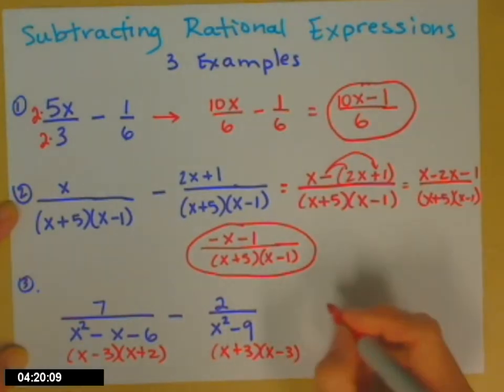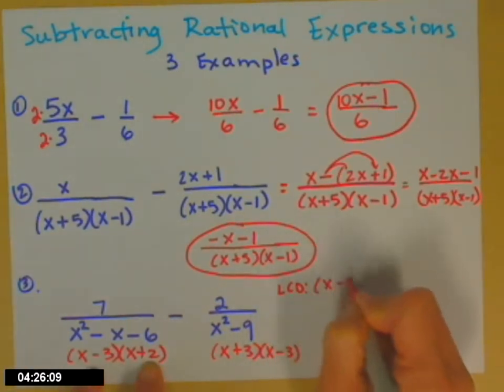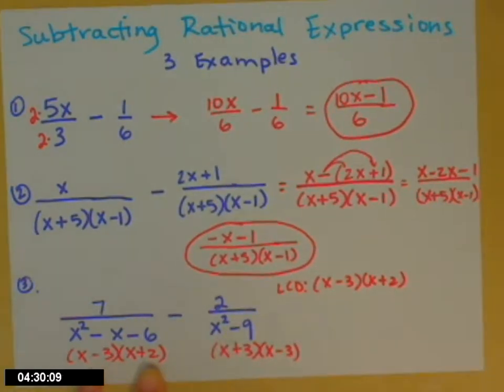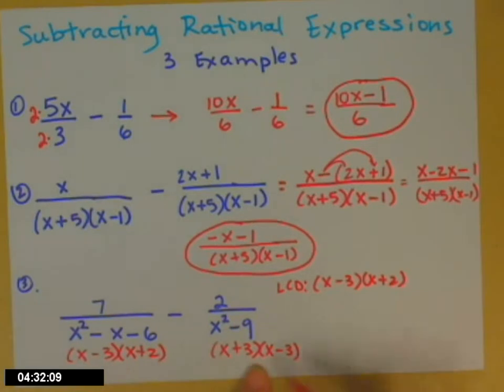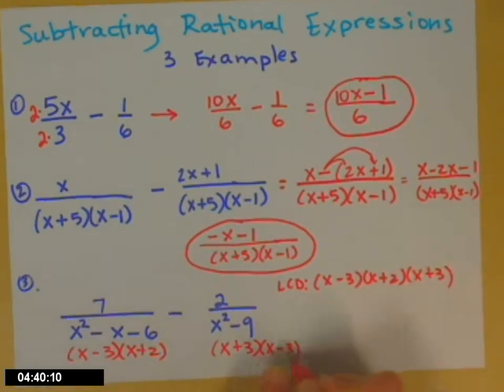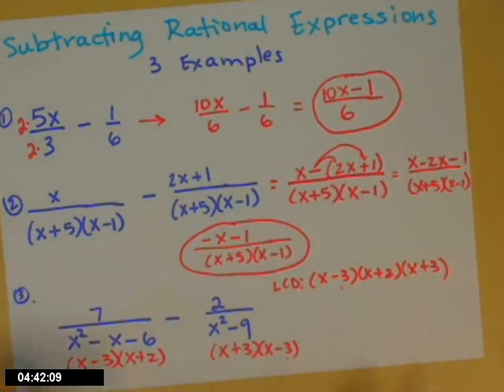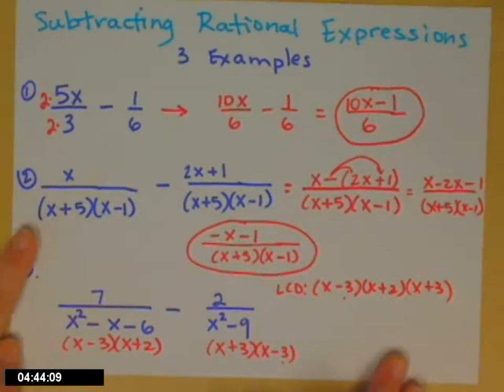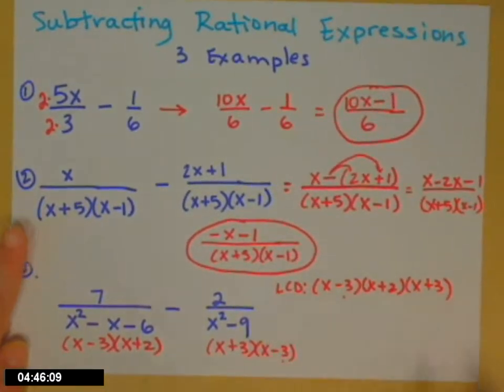So now I need to build up that LCD. So I take all of one of the denominators. I know it has to be at least that much, that my first fraction has it. Looking at the second one then. My second denominator needs an x plus 3. I don't have that. I better tack that on. It also needs an x minus 3. I do have that. So that one I don't need to put on there again. So here's my LCD.